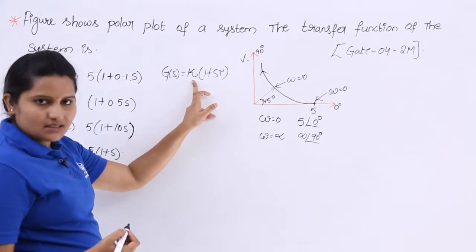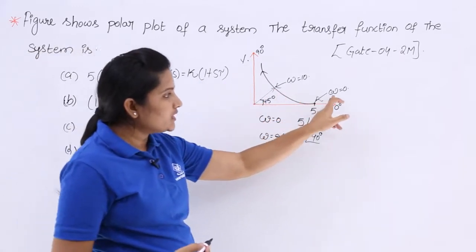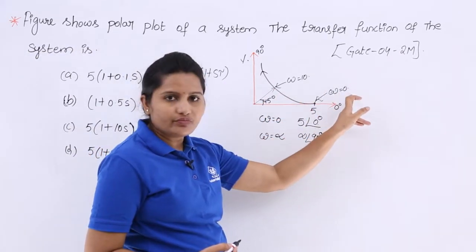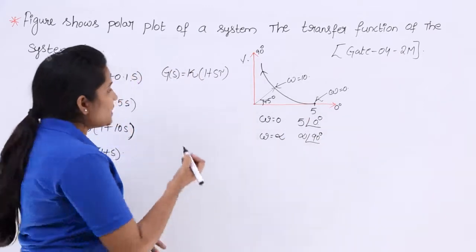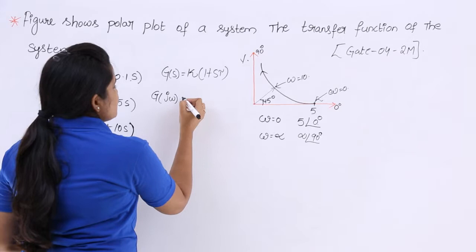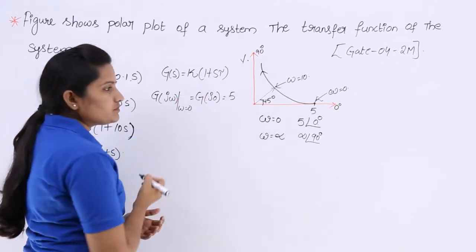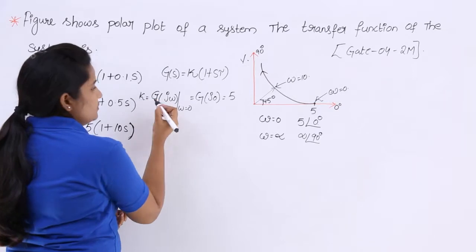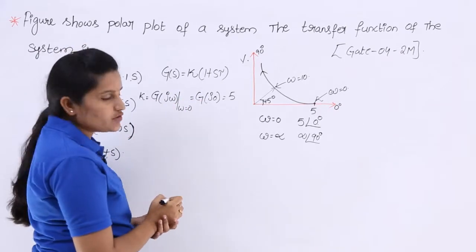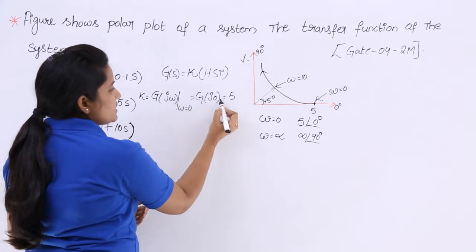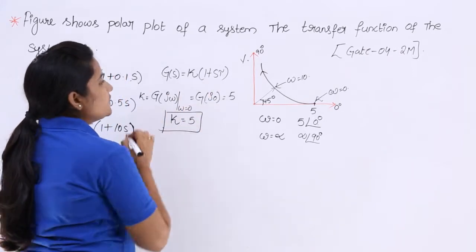Here, k is the value of the transfer function at omega equal to 0. We know that the magnitude of G(jω) at omega equal to 0 gives G(j0) = 5. Therefore, k is equal to 5.